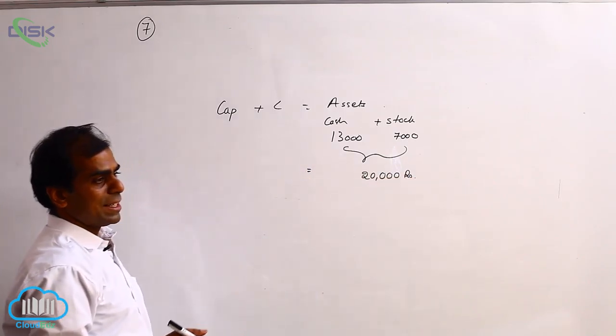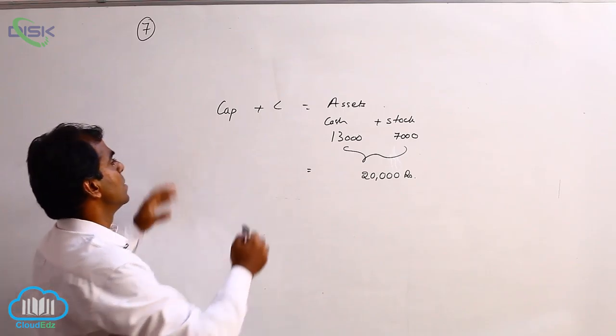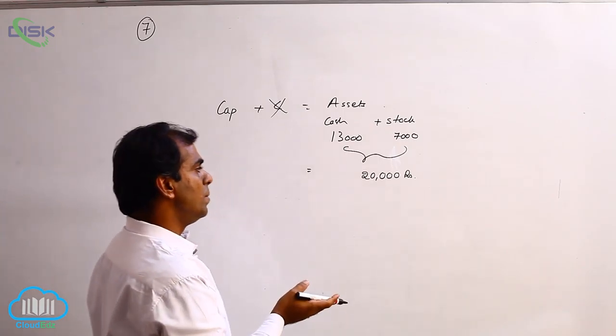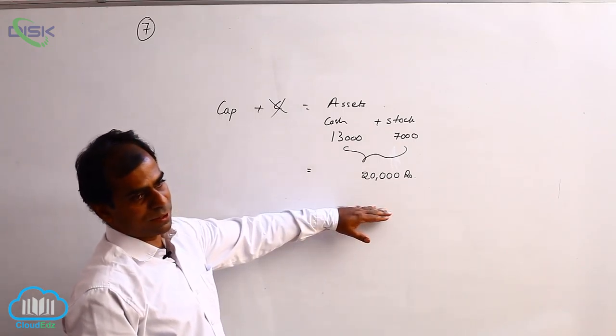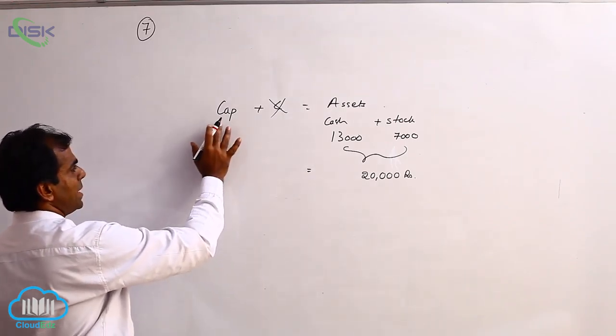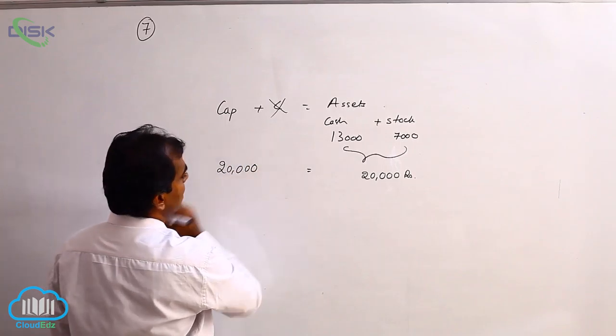Now what is stated? Who has given these resources? Nothing is stated about them. So the question of liabilities in this case does not arise. We assume the whole 20,000 worth of resources belong to the owner. So how is the owner represented? With the word capital. So we say our capital is 20,000.